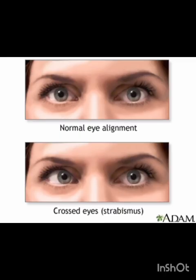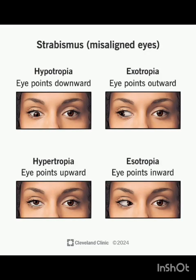Strabismus, also known as squint, is a condition in which both eyes are not aligned and do not look at the same point of focus at the same time. An inward deviation is known as Esotropia, an outward deviation is known as Exotropia, an upward deviation is called Hypertropia, and a downward deviation is known as Hypotropia.